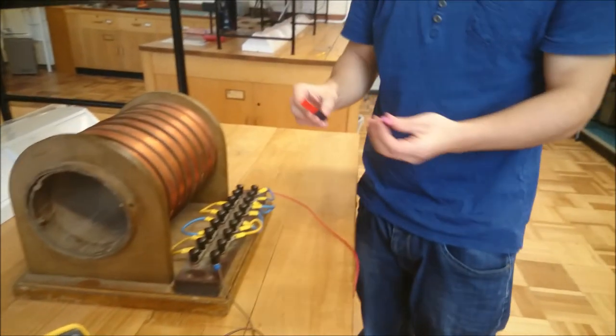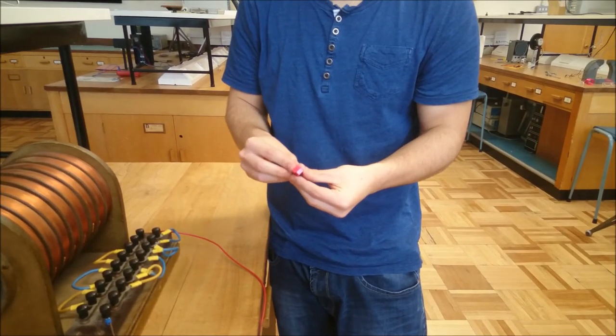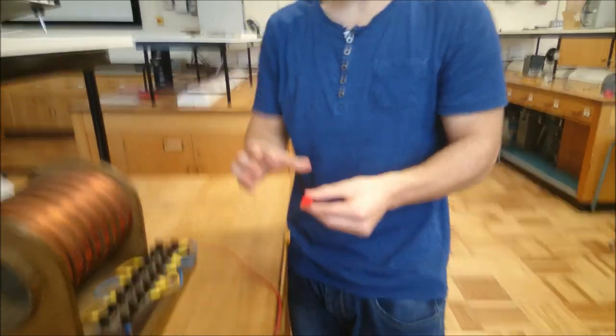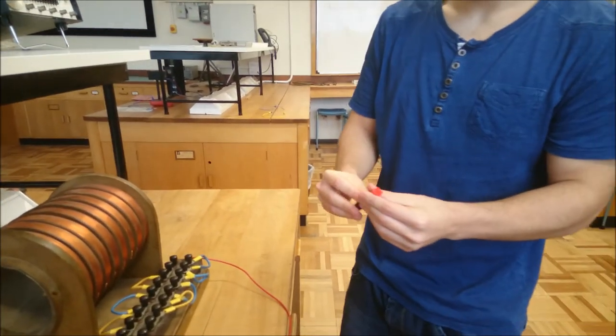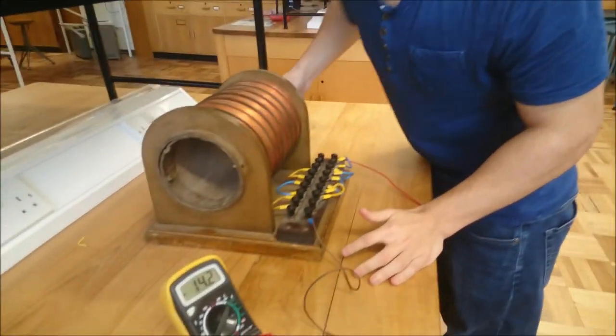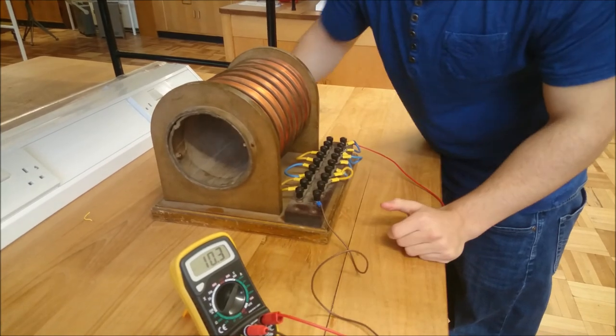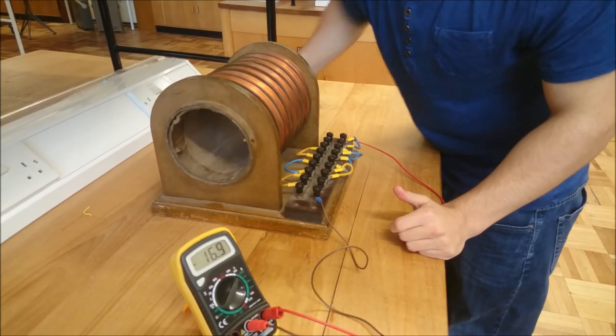Or you can take another bar magnet and align the north and south poles together, which will basically just make one bigger, stronger magnet. And we'll just run that through it, and that is a much bigger reading than the previous.